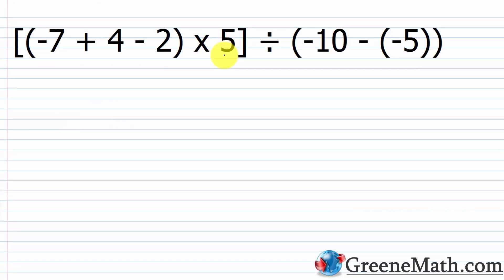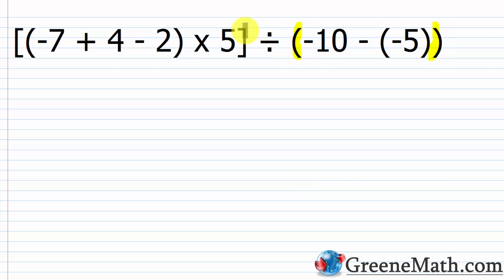For the next problem, inside brackets we have the quantity (-7 + 4 - 2), multiplied by five, then divided by the quantity (-10 - (-5)). I start by looking for grouping symbols. I have brackets, parentheses inside the brackets, and another set of inner parentheses. So I start inside the brackets, then go to the innermost parentheses.